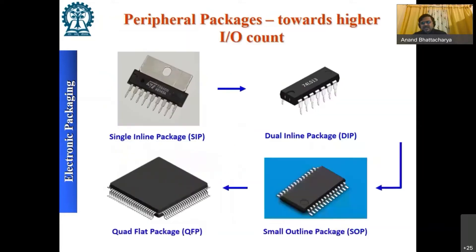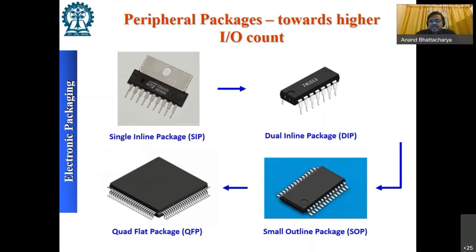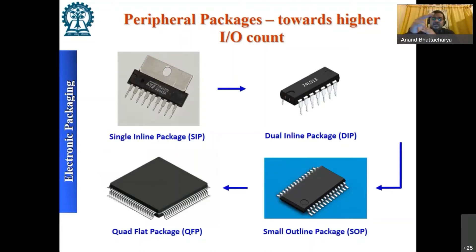The evolution from peripheral interconnects: first there was the single inline package with only one row of interconnections, then the dual inline package with two rows, then the small outline package with more closely spaced leads allowing more interconnections per unit length, and finally the quad flat pack using all four sides. However, being constrained by the periphery means that needing more interconnect points requires a larger package — a 1 cm × 1 cm silicon chip might need a 2-inch × 2-inch package, which is not area-efficient.